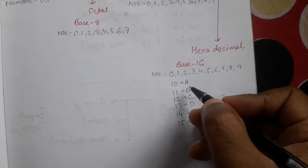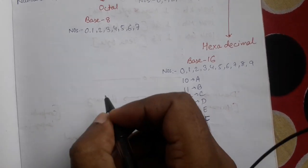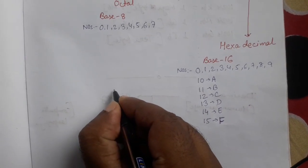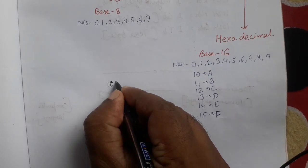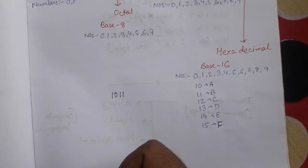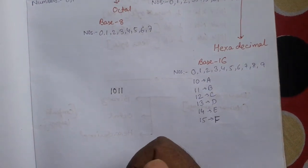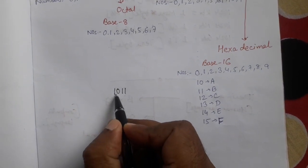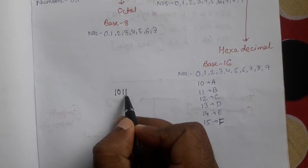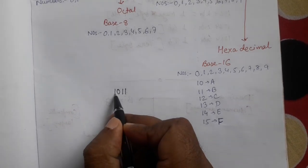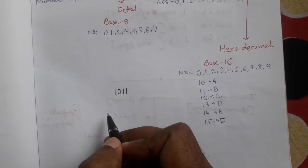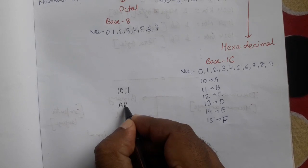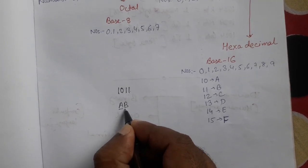So the question is: why do we write a, b, c, d, e, f? I am giving one example. Let us consider, suppose we want to write this. Now, you tell me — in hexadecimal number system, is it 10, 11 or 1, 0, 1, 1? We cannot say what it is. But if we write a, b, we can easily say: ok, it is 10, it is 11.